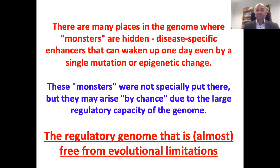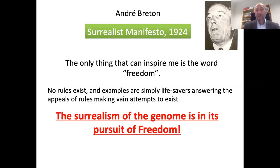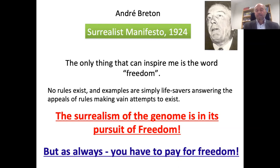In our genome, many monsters are hidden — those disease-specific enhancers. But it seems those monsters were not specifically put there intentionally; they may appear by chance due to the large regulatory capacity of the genome. This is due to the regulatory genome being almost free from evolutionary limitations. Since there are some patterns, maybe if we wait another billion years of evolution it will be completely random — not yet fully free. As André Breton, who was at the beginning of the surrealist movement, said: the only thing that can inspire me in the world is the word freedom. In the case of the genome, the surrealism of the genome is its pursuit of freedom.